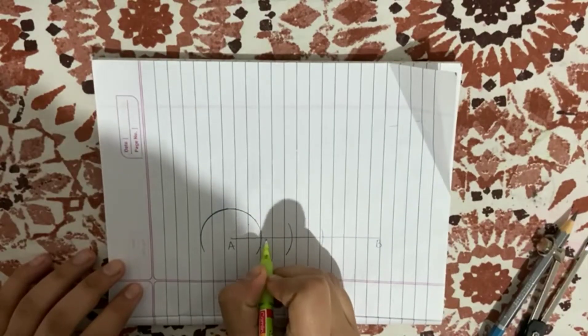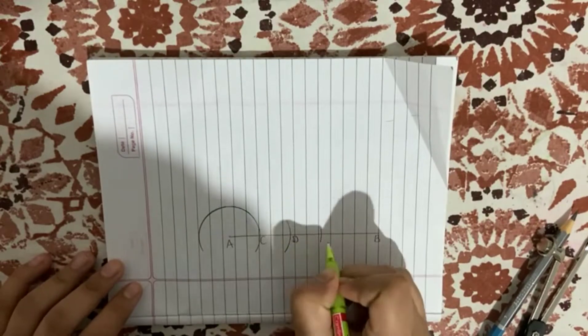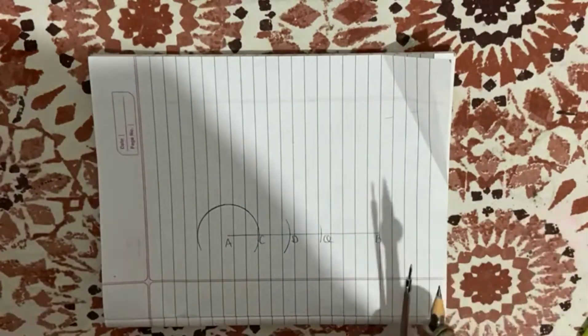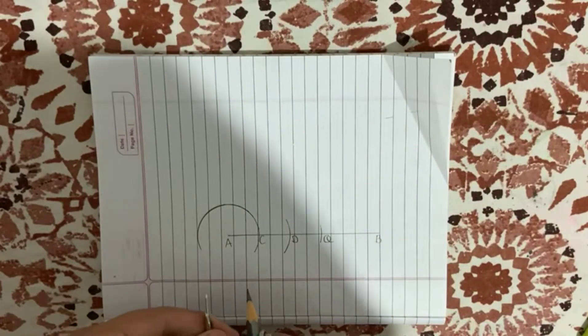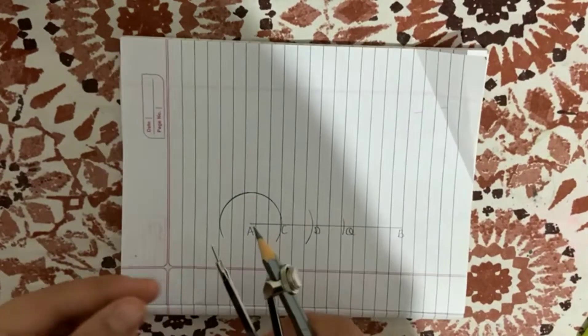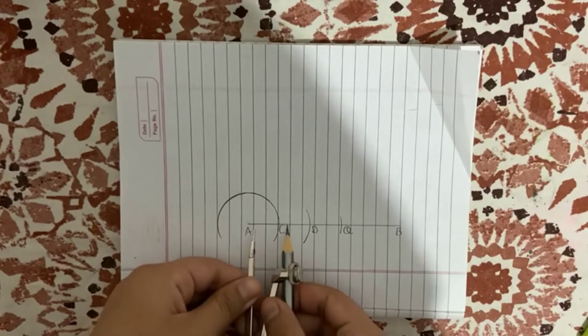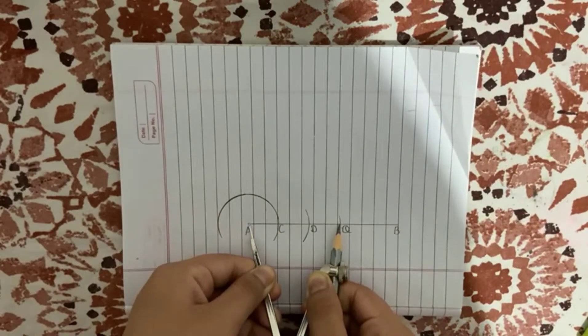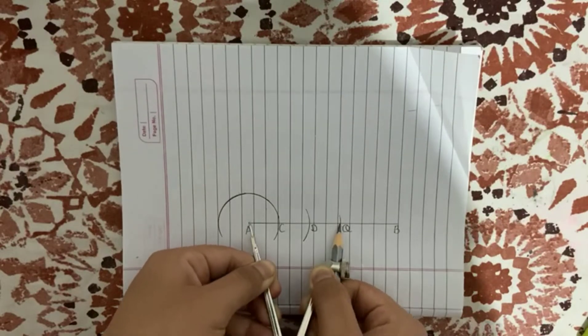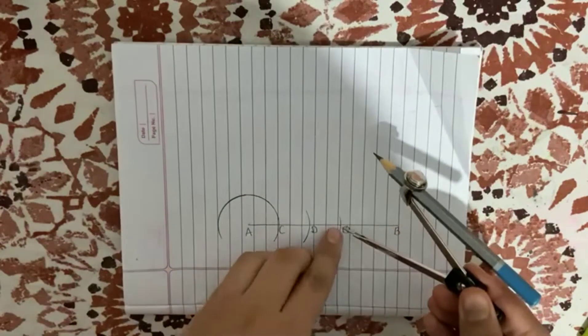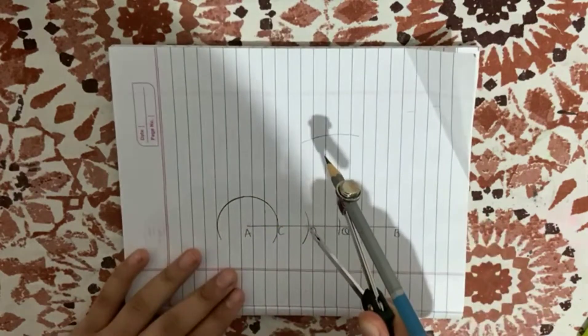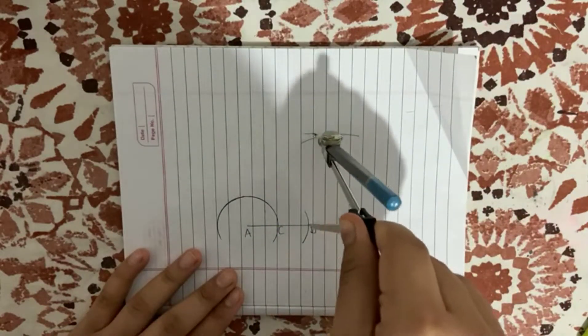This will be C, this will be D, and this will be Q. Now what we will do is keep the point here at A and measure the distance between Q and A, and we will keep the point here and make an arc like this, keep the point here at D and make an arc.